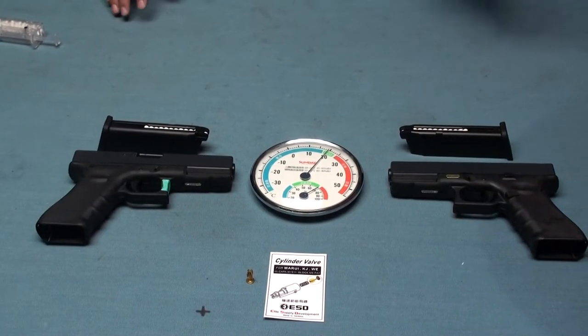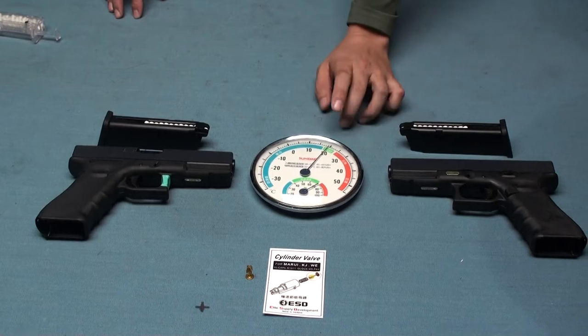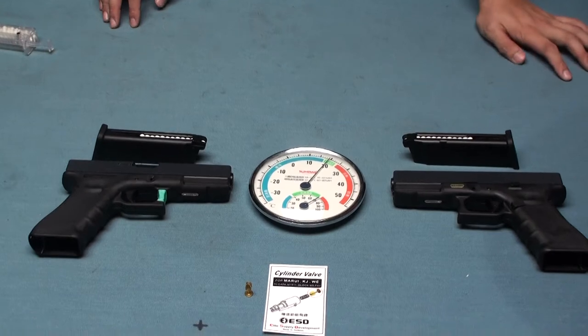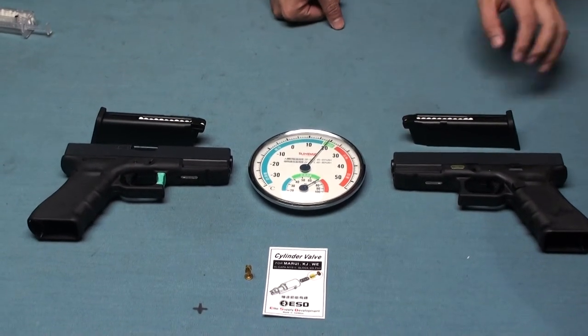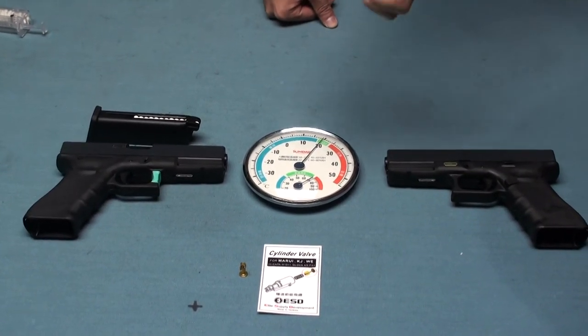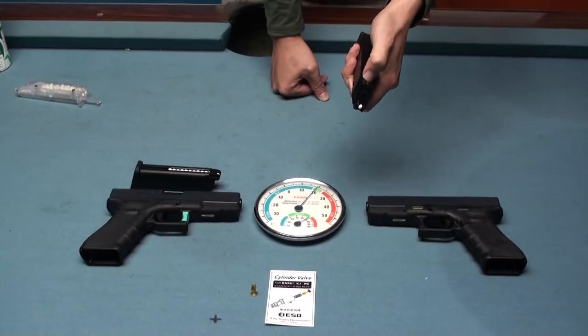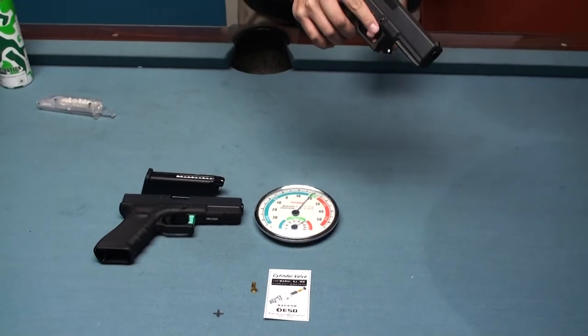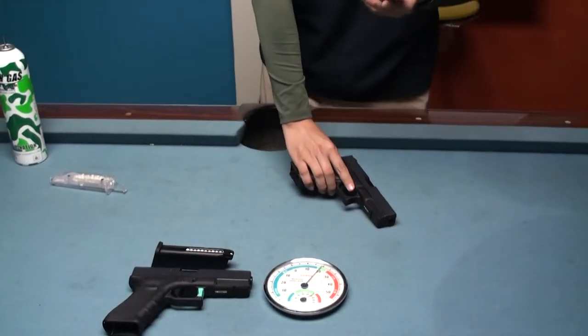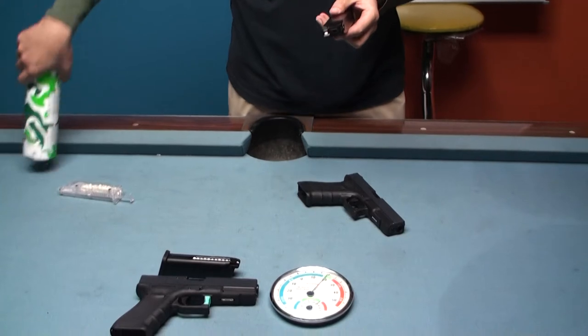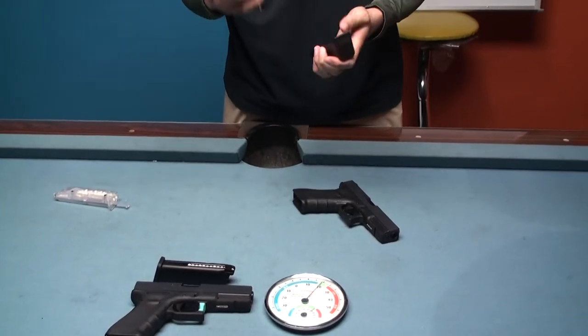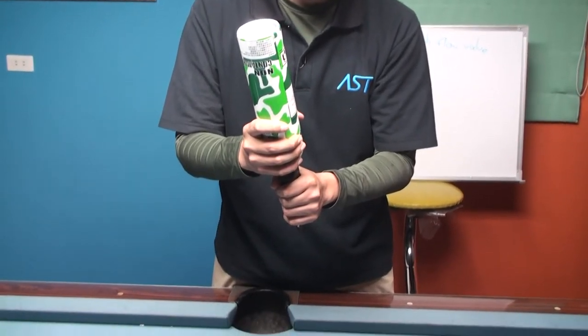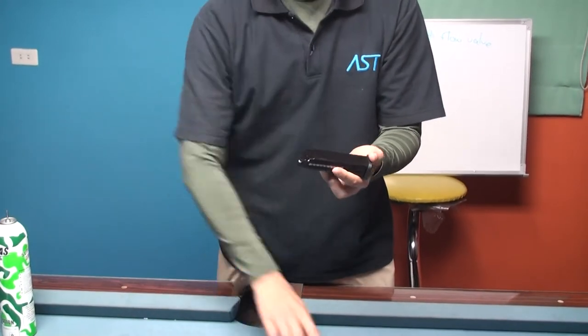Okay, now we are going to test these two different samples. Today the temperature is about nearly 20 degrees Celsius and the humidity is over 70. I press the magazine valve to show you this gas tank is empty. And then this is the original WE Glock 17. I want to try to fire as many rounds as possible, but I only recharge green gas one time, about 6 seconds.